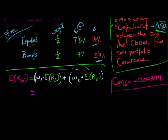So I'll use the same color code. The weight of equities is 0.5 multiplied by the expected return, 7.5%. In fact, I'll enter it as a number. So 7.5% will be 0.075.